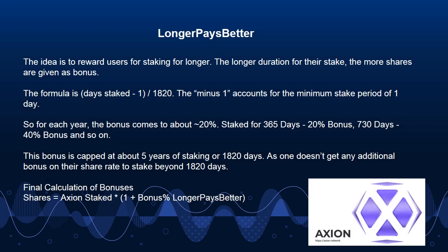The idea is to reward users for staking for longer. The longer the duration of their stake, the more shares are given as bonus. The formula is: days staked ^ (1/1820). The minus 1 accounts for the minimum stake period of 1 day. So for each year, the bonus comes to about ~20%: staked for 365 days = ~20% bonus, 730 days = ~40% bonus, and so on. This bonus is capped at about 5 years of staking, or 1820 days.